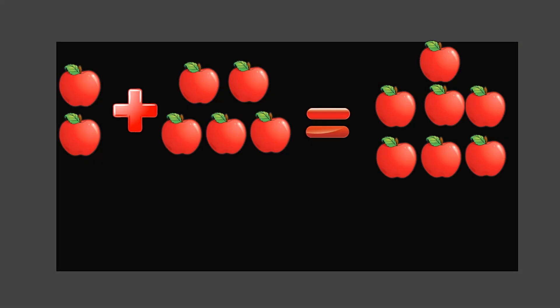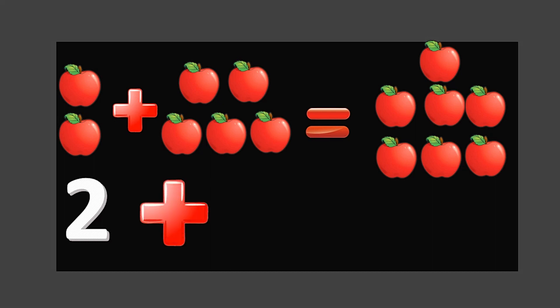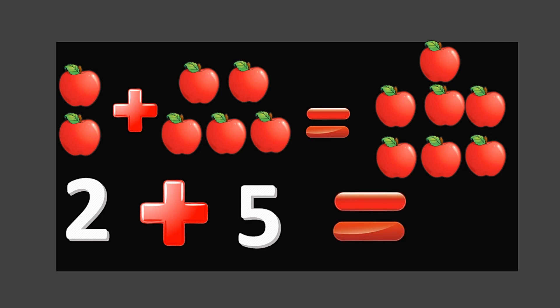Students, can you try to write an addition sentence for this picture? Remember to count all the apples in each group separately. There are two apples in the first group, and five apples in the second group, so we are adding two and five. Two plus five equals seven.